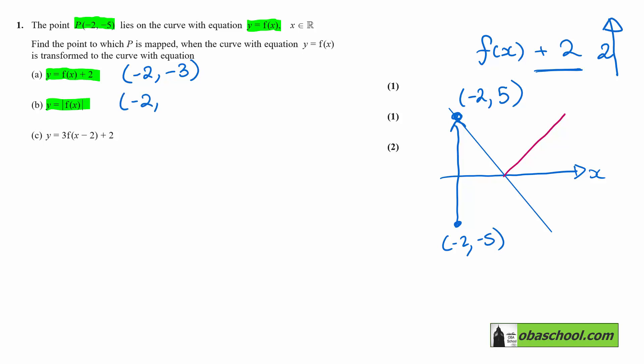So this one is (-2, -5). Finally, we have 3f(x - 2) + 2.